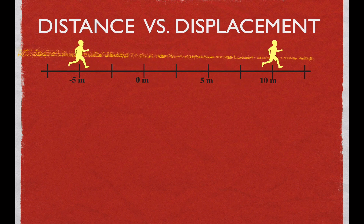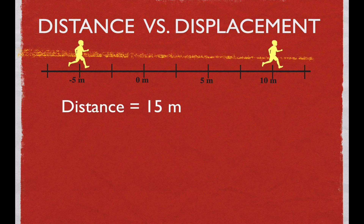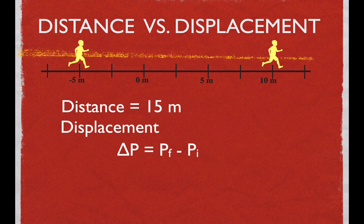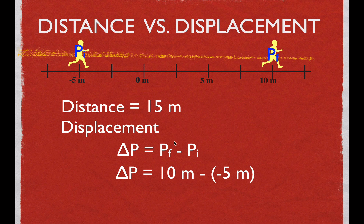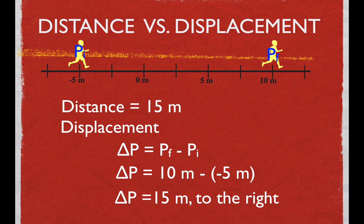Here's a good example. We have a boy who starts at minus 5 and moves to plus 10. The distance he went is 15 meters. But what's his displacement? Displacement is final minus initial position. The final position is 10, minus the initial position of minus 5: 10 minus minus 5 equals 15, and it's 15 meters to the right. We know it's to the right because the number is positive. In this case the magnitude is the same, but displacement includes the direction, which is why it's called displacement.